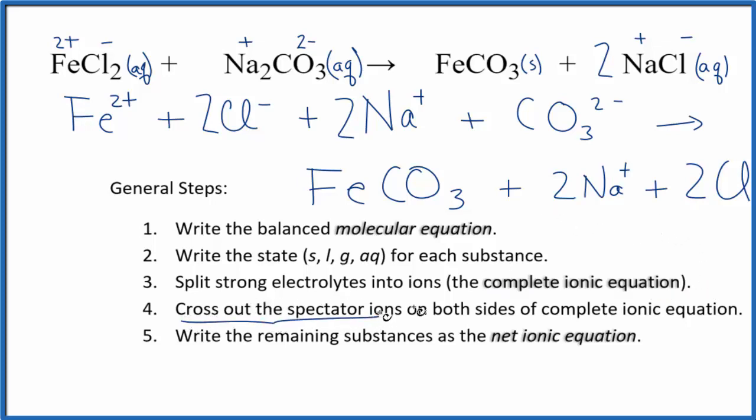Now we can cross out spectator ions. These are ions on both sides of the equation. They haven't changed, so we start out in the reactants with two chloride ions, and we end up with two chloride ions. Those are spectator ions. Cross them out. Same for sodium here. We have two sodium ions in the reactants and two in the products. We can cross those out as well. But everything else is unique, so we're going to leave that.